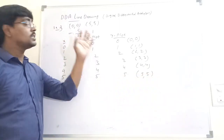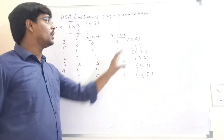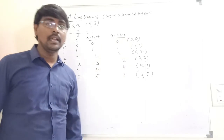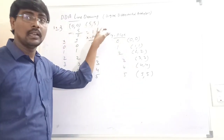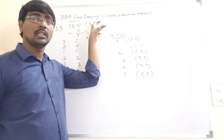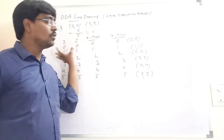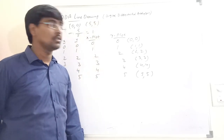This is the DDA Line Drawing Algorithm. In summary, we first calculate the slope, then based on the slope value we follow one of three approaches. Thank you.